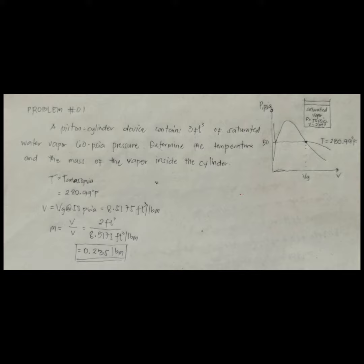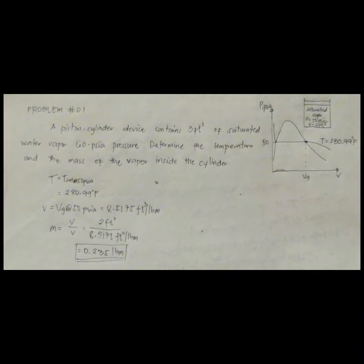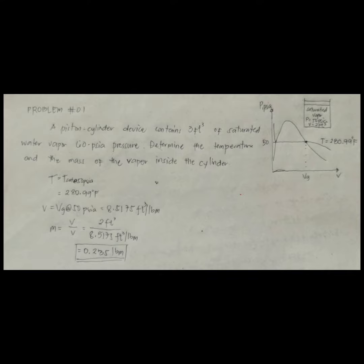Then the mass of water vapor inside the cylinder becomes: mass equals volume over v, which equals 3 cubic feet over 8.5175 cubic feet per pound mass. So we have 0.235 pound mass. That will be all, thank you.